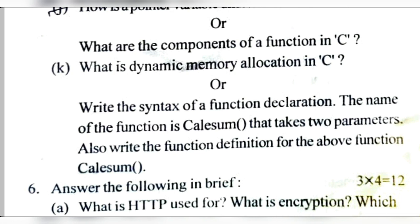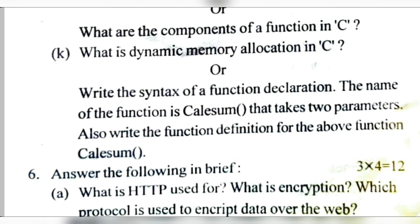Write the syntax of a function declaration: return_type function_name(arguments); For example: int sum(int a, int b); The function is named 'sum' and takes two parameters. Also write the function definition — for example, CalcSum with the appropriate parameters.